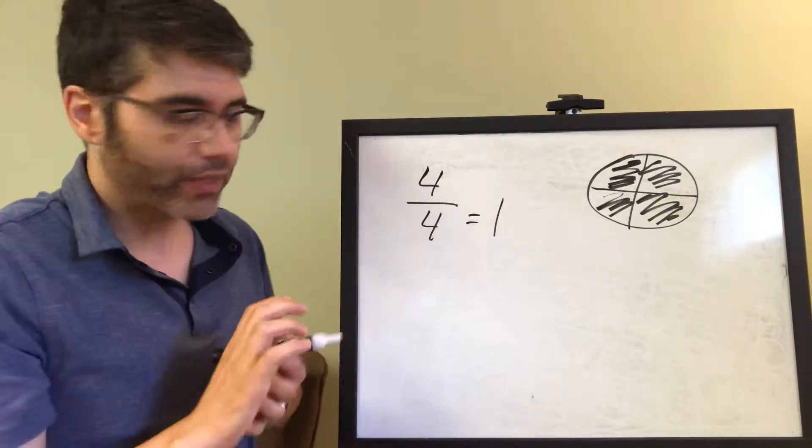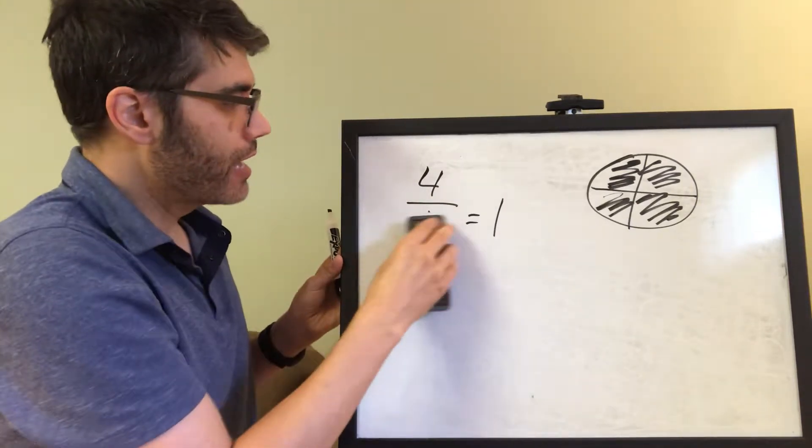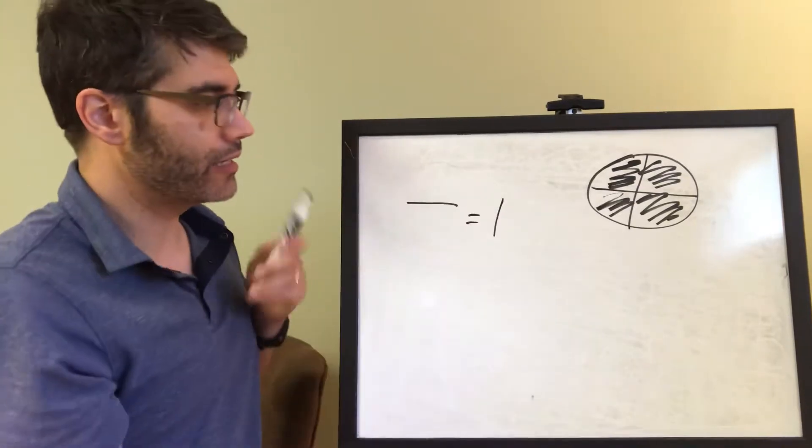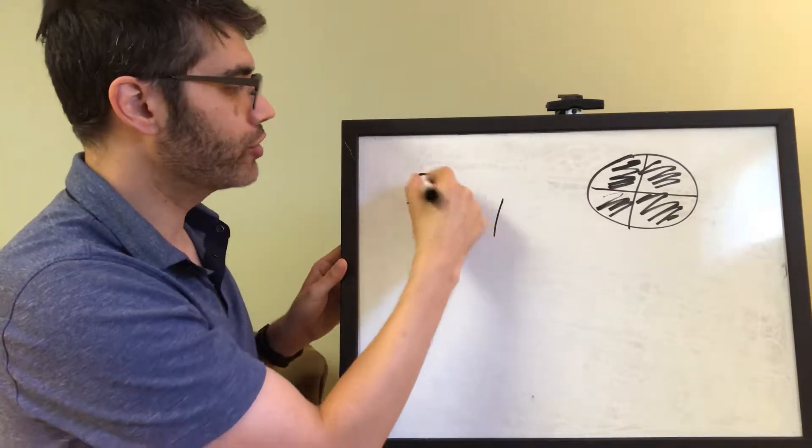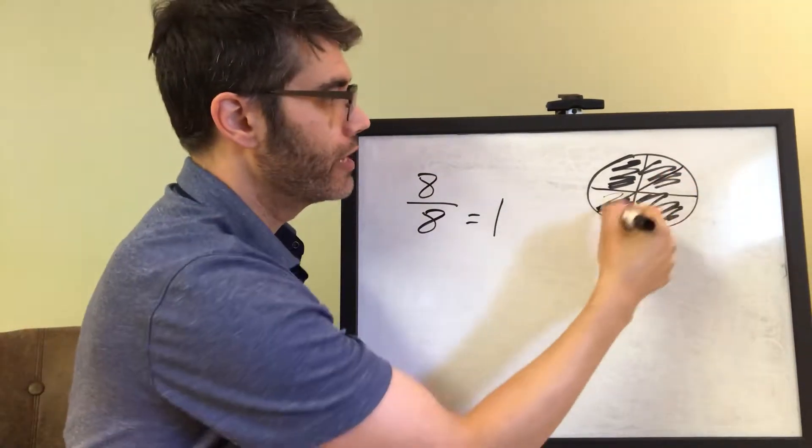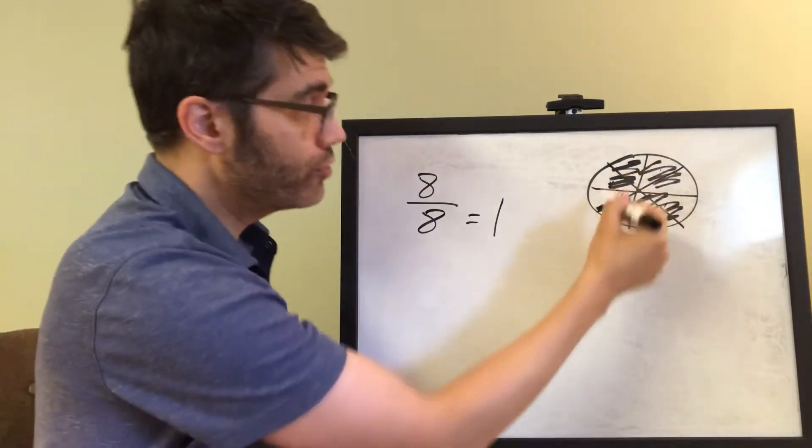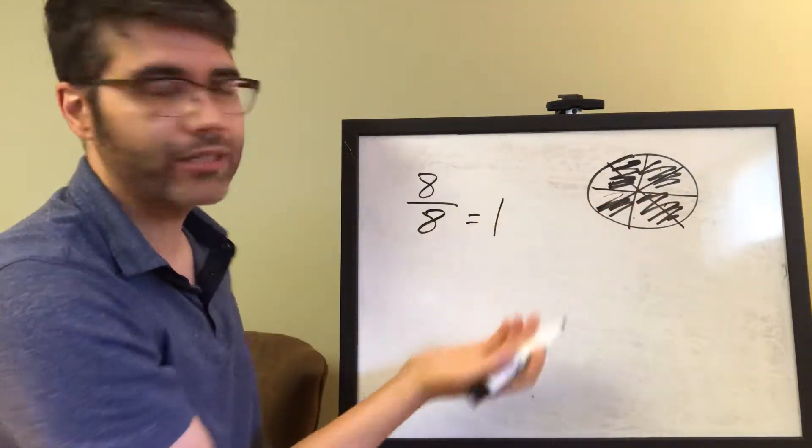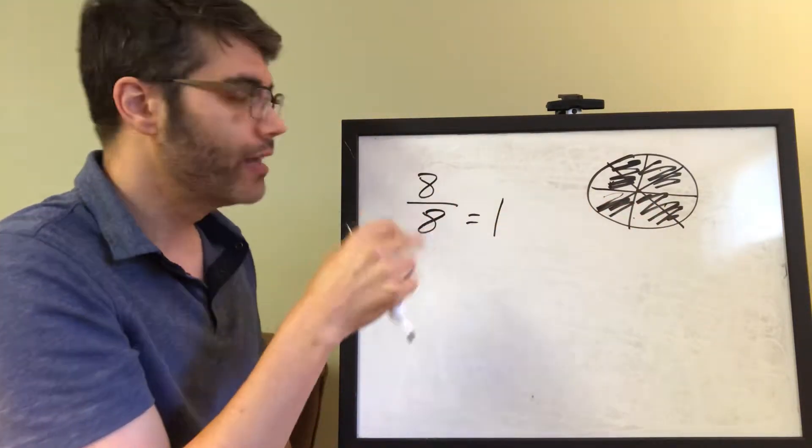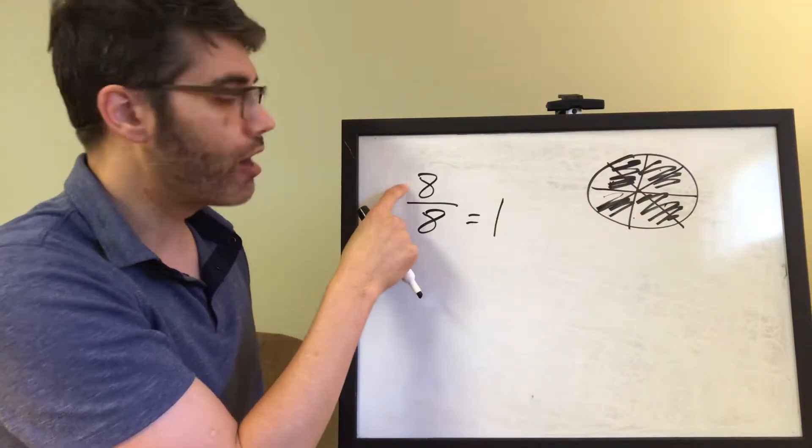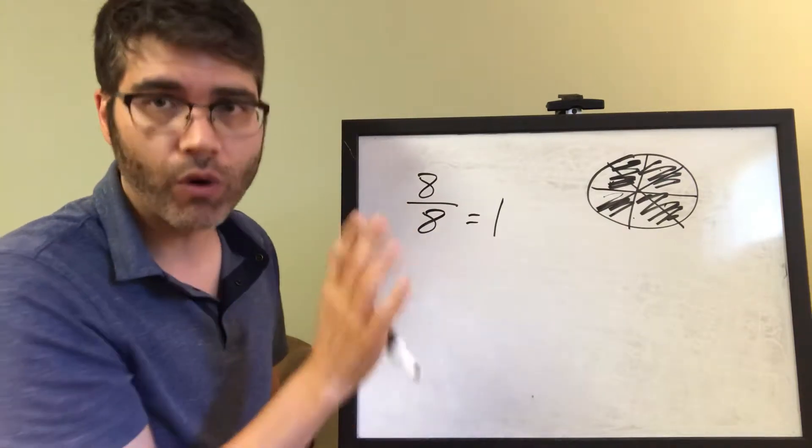So if I divided this into 8 slices, and I chose 8 slices, I'd still choose 1 whole pizza. So now I just divided it into 1, 2, 3, 4, 5, 6, 7, and 8 slices, but I choose all 8 slices, I'd still choose the same whole pizza. So that's why any non-zero number over itself will equal 1 whole.